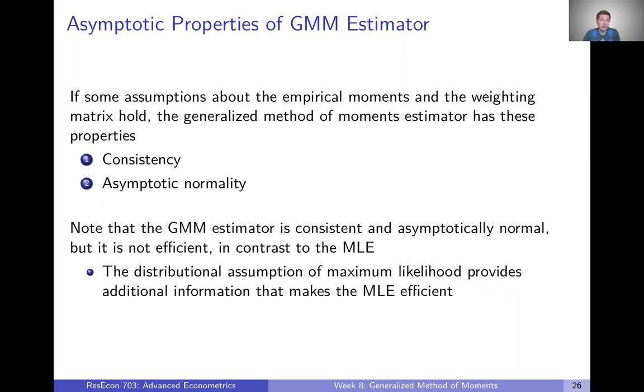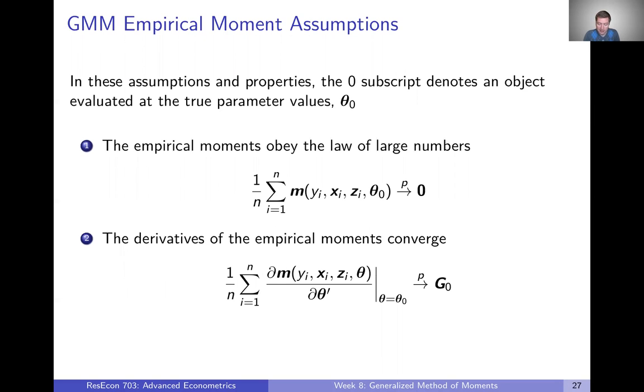GMM allows for weaker assumptions about our data, but as a result, we might get a less efficient estimator. But consistency and asymptotic normality are great properties as well, and so we're going to talk about those in this video. But first, let's talk about these conditions that have to hold.